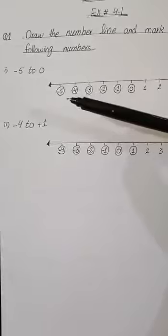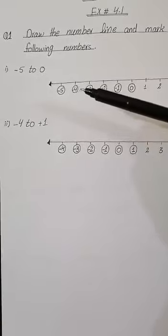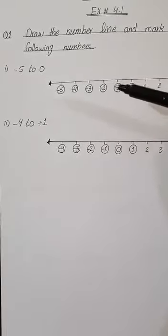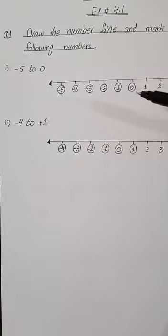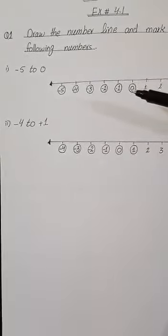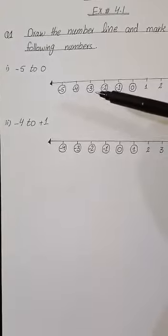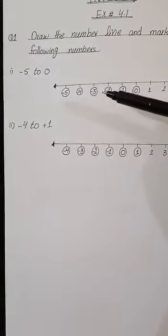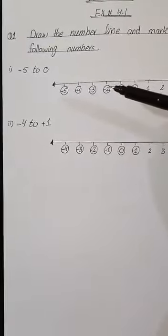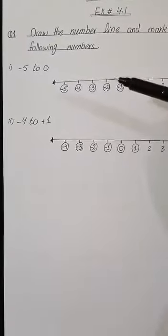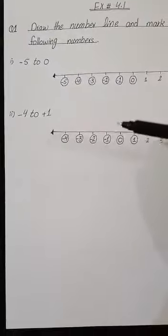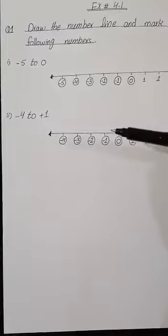We circle minus 5, minus 4, minus 3, minus 2, minus 1, and 0, because these numbers are demanded in the question — all the negative numbers. So, move on to the next question.